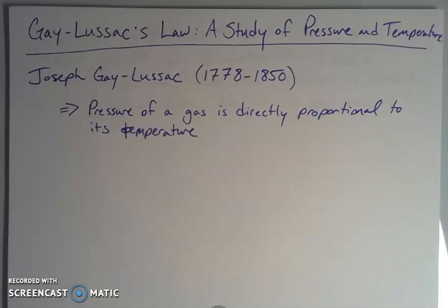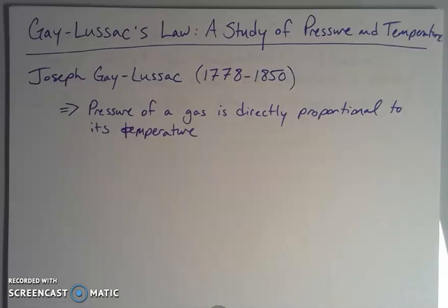Gay-Lussac is also well known for discovering the element boron — he actually isolated it from boric acid. Boron is element B on the periodic table, atomic number five. He's also known for some analytical chemistry work; he's credited with creating things like a burette, which is used for titrations, and some other volumetric glassware that increased the precision of experiments at the time. So he had his hands in a lot of different chemical pies.